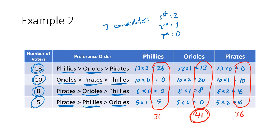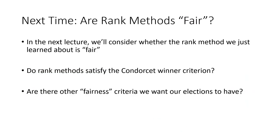The Orioles are the winner here with 41 points. Next time we're going to talk about whether these rank methods are fair — this is always the question we ask once we learn how to use a new method. Do these methods satisfy the Condorcet winner criterion, which we talked about in the previous section? And are there other fairness criteria we want to use to analyze these rank methods to see if they have this fairness?